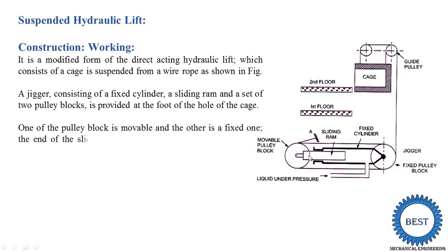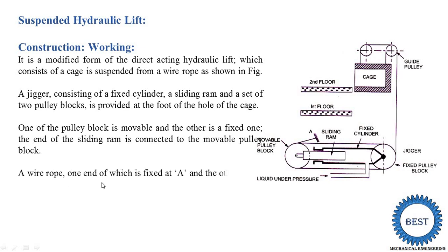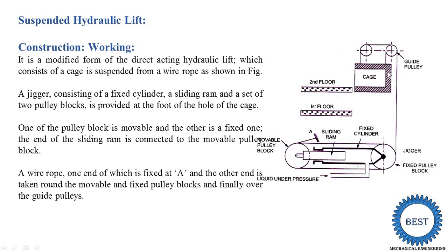The sliding ramp and a set of two pulleys are provided on the Jaguar. One of the pulley blocks is movable — this left side portion is the movable one — meaning this pulley moves from this position up to here, depending on the length of the sliding ramp. When this end of the sliding ramp reaches here, then our pulley reaches here. So this movement of the pulley changes the length of the rope, which is where the suspended cage moves up and down. The other pulley block is fixed. One end of the wire rope is fixed at point A — the wire comes from the two pulleys, then the fixed pulley, and is fixed at point A. The wire rope moves from the movable pulley to the fixed pulley, then over the guide pulley and onto the cage. The components are: cage, guide pulley, Jaguar, fixed pulley, cylinder, sliding ramp, and movable pulley.